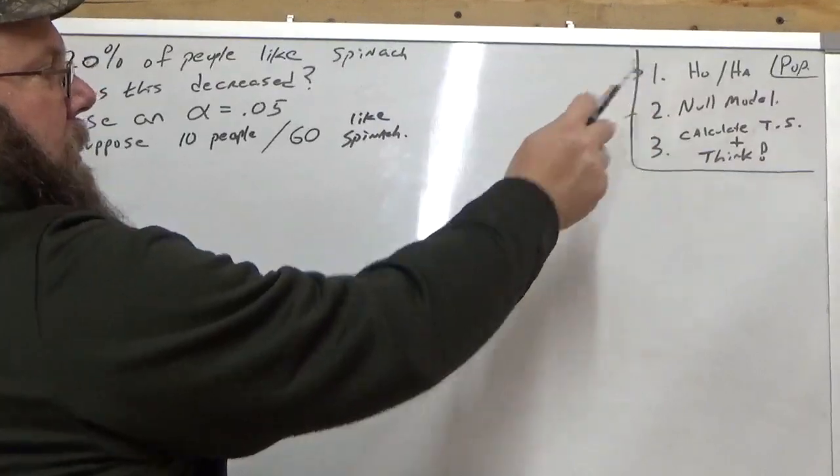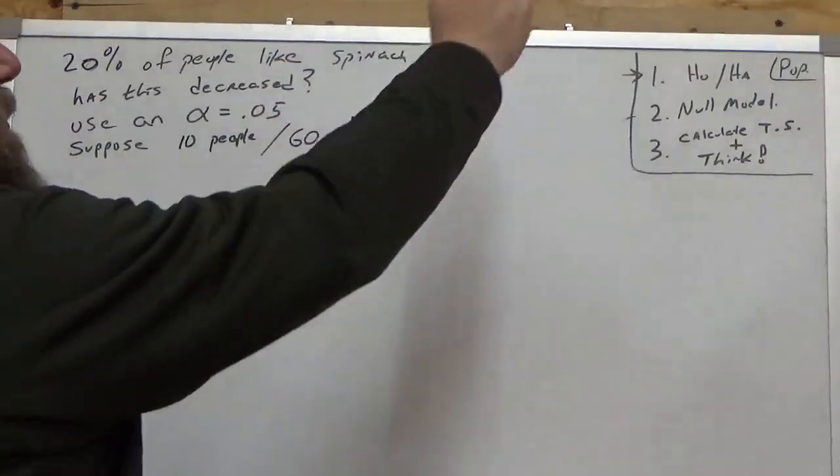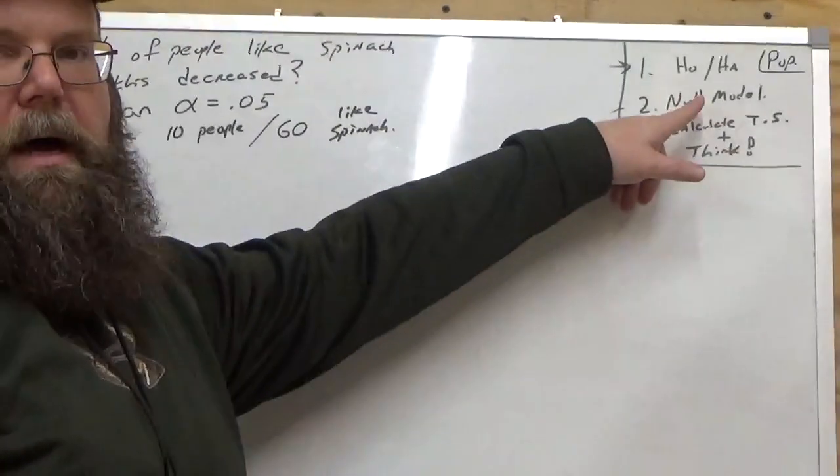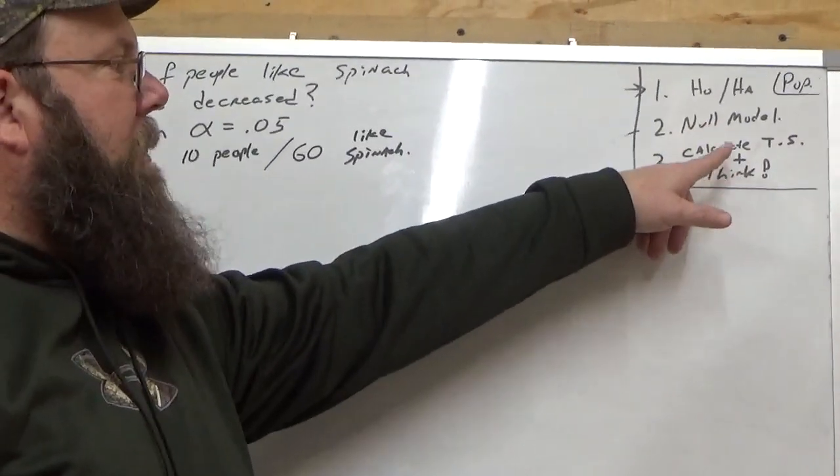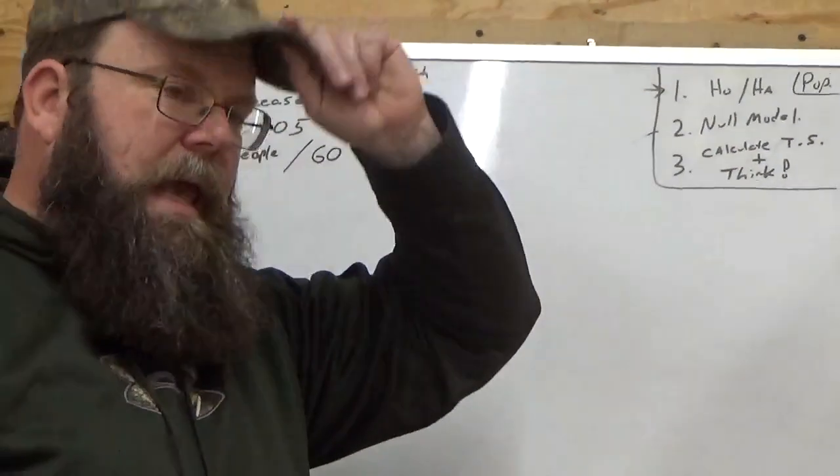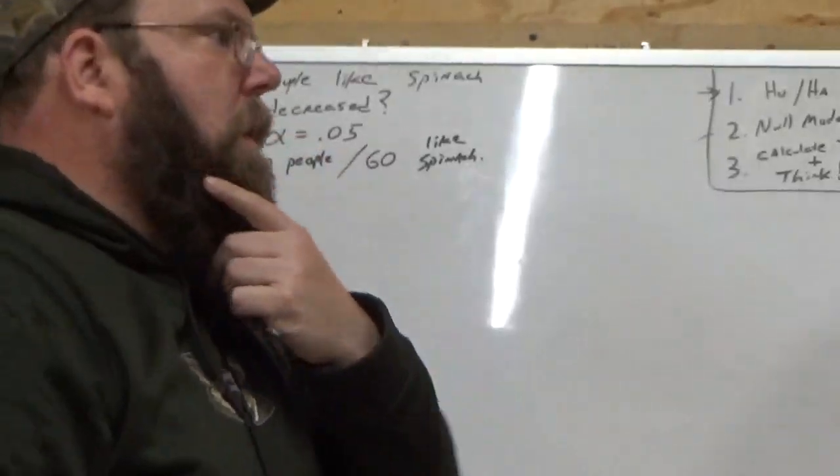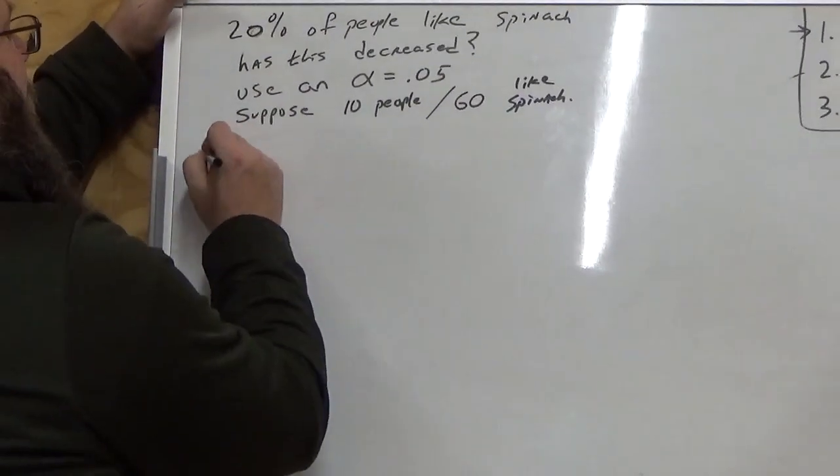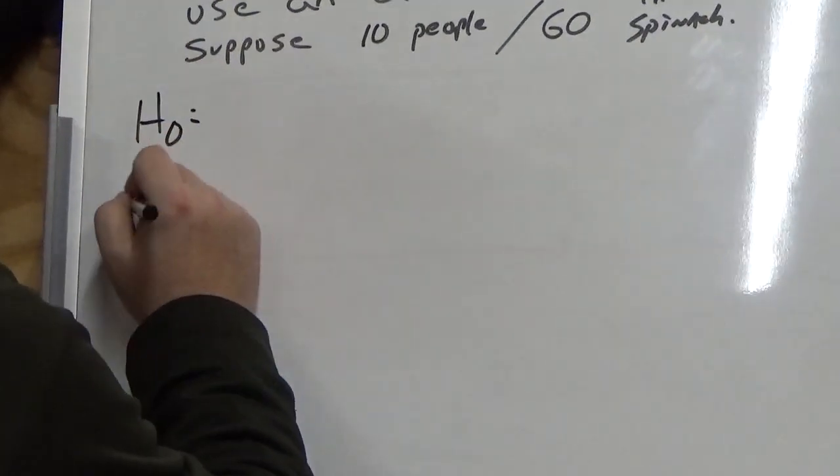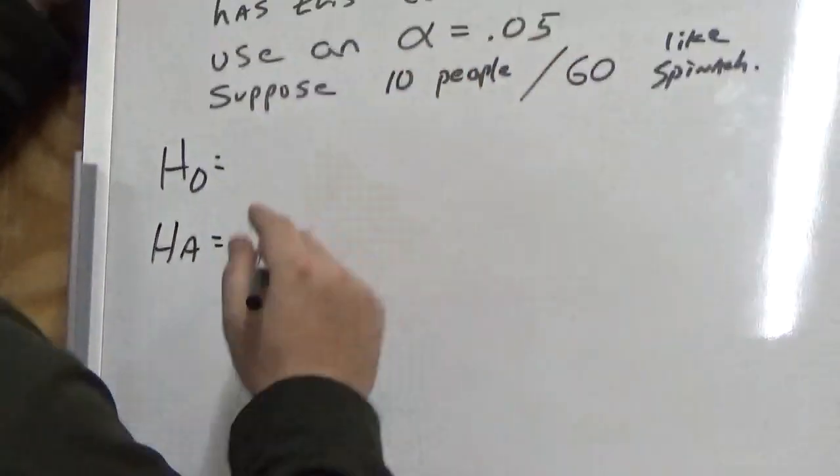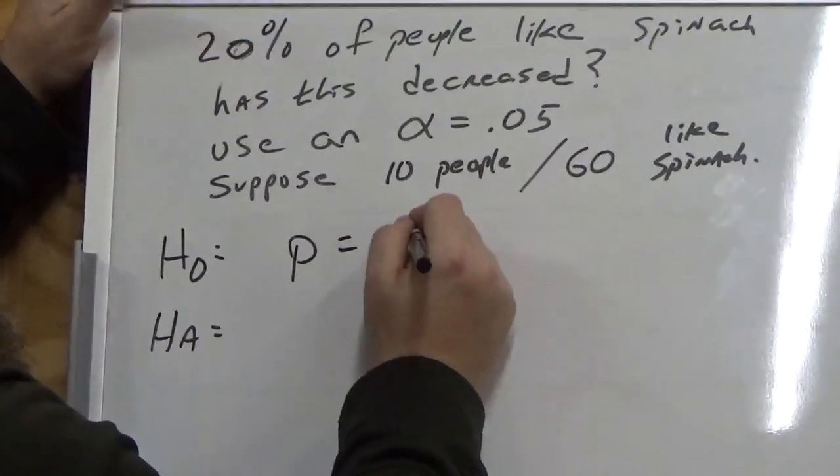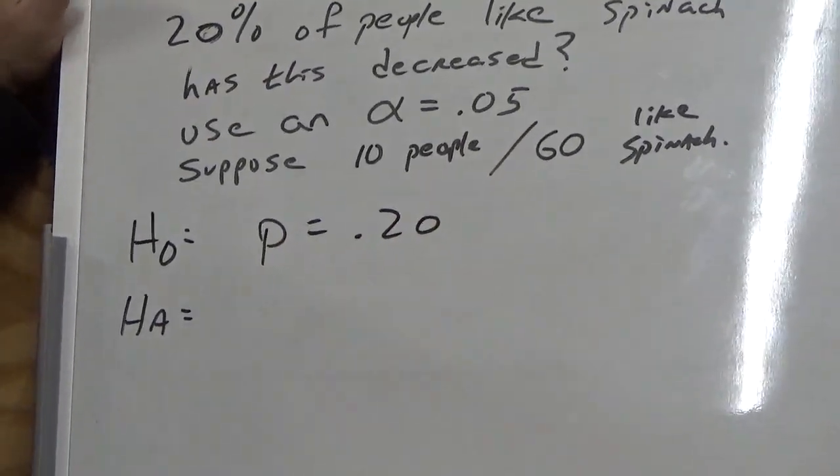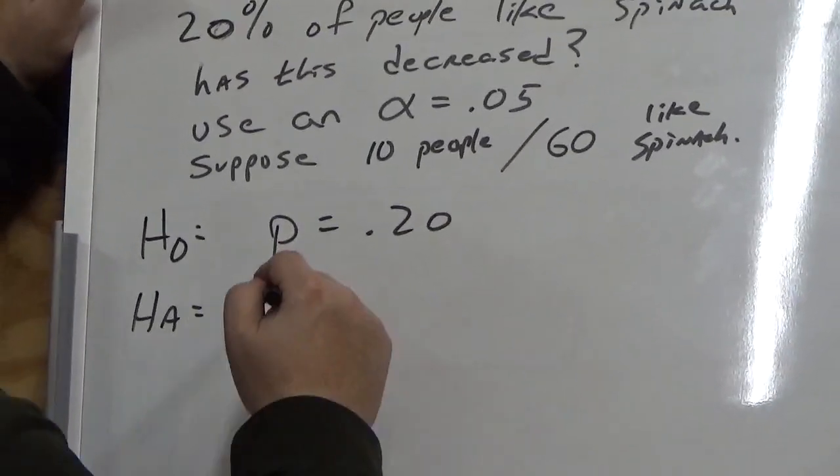So we're going to follow this format. Find the Ho-Ha. Ho-Ha comes from the population. We're going to draw a null model. And then we're going to calculate our test statistic and we're going to think about this. And this is going to be a left tail test. Why is it going to be left tail? Because it decreased. So our Ho-Ha, 20% of people like spinach. P equals 0.20. Has this decreased? There's our Ha. P less than 0.20.